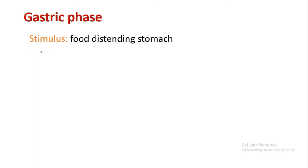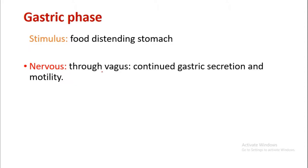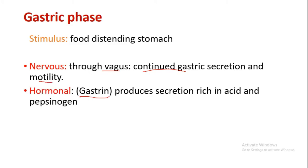The gastric phase: stimulus is food distending the stomach — the presence of food inside the stomach is the stimulus. Nervous regulation is through the vagus, causing continued gastric secretion and motility. Hormonally, the hormone gastrin produces secretion rich in acid and pepsinogen. The G cells of the stomach mucosa secrete gastrin.